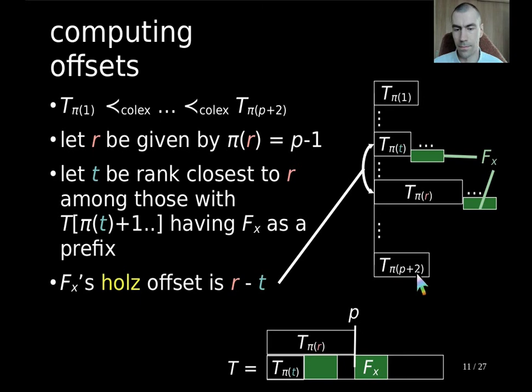So, we start at rank 1 until rank p plus 2. And we are here in this picture, and what we want to find is this prefix after which Fx is. And this is here visualized, and we say that it has the rank r. And what we also want to find are those prefixes, after which there is another occurrence of Fx. And we want to take the one which is closest to the prefix of rank r, which we call, or whose rank we call t. Like in this figure, it has again Fx after in the prefix. And let's assume this one is the closest one. Then we say this has this rank t. And what we do is that we say that the Holz offset of this factor is just the difference between r and t.